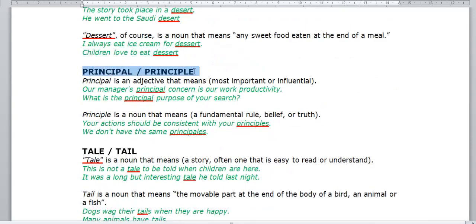Principal and principle. Principal is an adjective that means most important or influential. Our manager's principal concern is our work productivity. His main, most important. What is the principal purpose of your research? What is the most important purpose, the main purpose? Principle is a noun that means a fundamental rule, a belief or truth. For example, your actions should be consistent with your principles. We don't have the same principles.